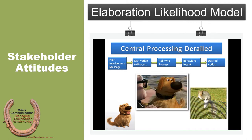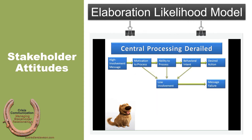Except that this process can be derailed. The challenge of the Elaboration Likelihood Model is that high involvement messages and our interest and ability to process them — having that lead to behavioral intent — can be derailed at any point. Each one of these green arrows represents an opportunity for things to go wrong. A squirrel moment happens; something else catches our attention, and we move from centrally processing to low involvement. When this happens, it can lead to the failure of the message. As soon as we're no longer thinking and concentrating about a message using an ELM approach, we're probably going to fail.